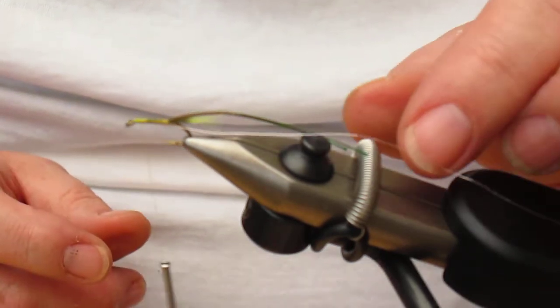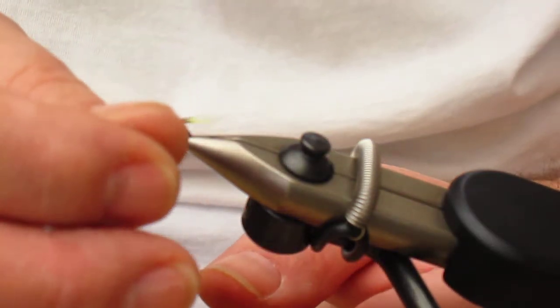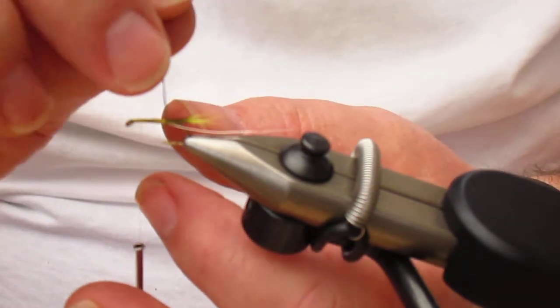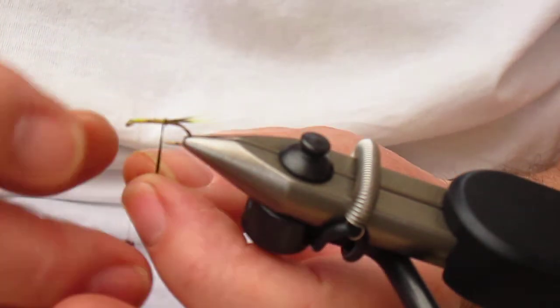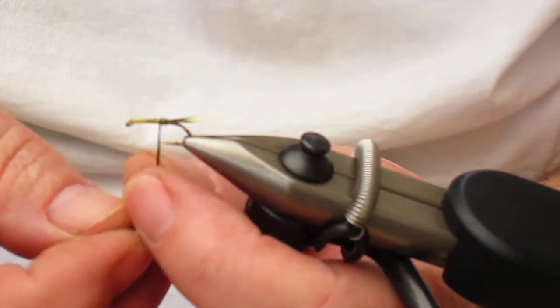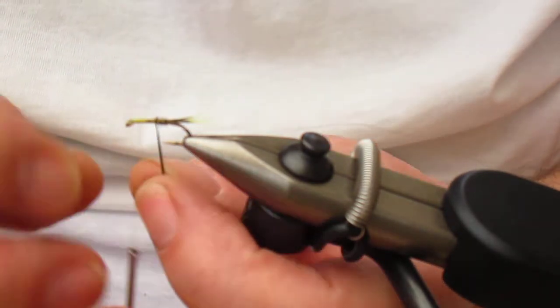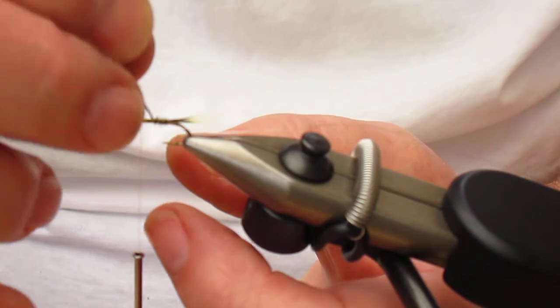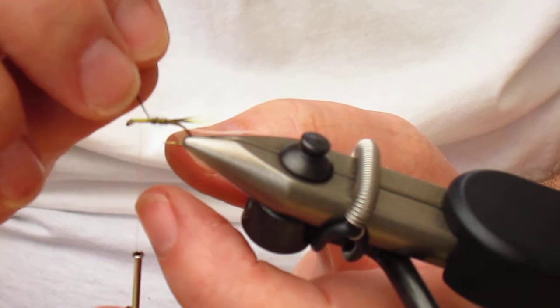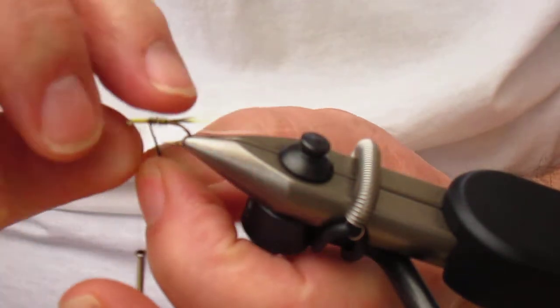Now we've got to pick up the pheasant tail fibers and we're going to wind them in slightly open turns, because what I want is a little bit of the underbody showing through. Not a lot, just a hint of that yellow thread underneath. As you can see, it does leave quite a nice effect.